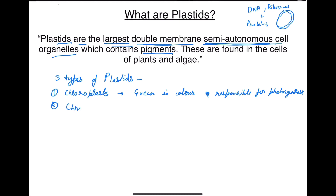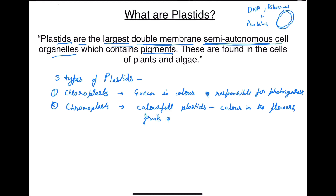The second type is chromoplast. These are colorful plastids of different colors which give colors to the flowers, fruits, and vegetables. Because of these plastids, vegetables, flowers, and fruits look beautiful and colorful. For example, the red color of roses is because of chromoplasts. So their main function is to provide bright color to the flowers, fruits, and vegetables.